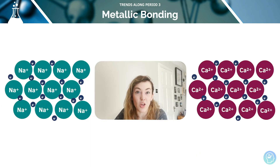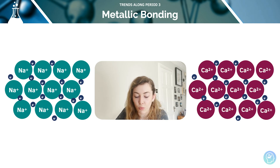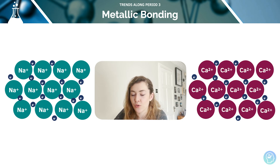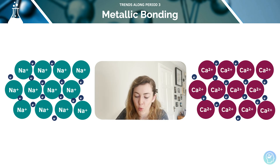Another example: comparing sodium and calcium. Sodium is in group 1, so it drops just one electron off for each cation. Whereas with calcium, we're going to be dropping two electrons off, and that's going to increase that electrostatic force of attraction, therefore requiring more energy to break.